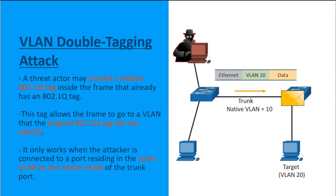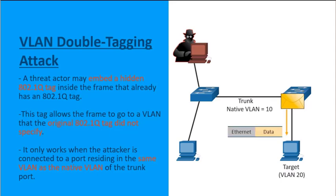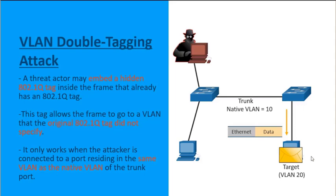The second switch receives that frame, strips off the VLAN 20 header, and forwards it out any VLAN 20 ports, including down to the targeted host. This effectively allows the threat actor's machine on VLAN 10 to communicate to the target on VLAN 20 using a double tag.